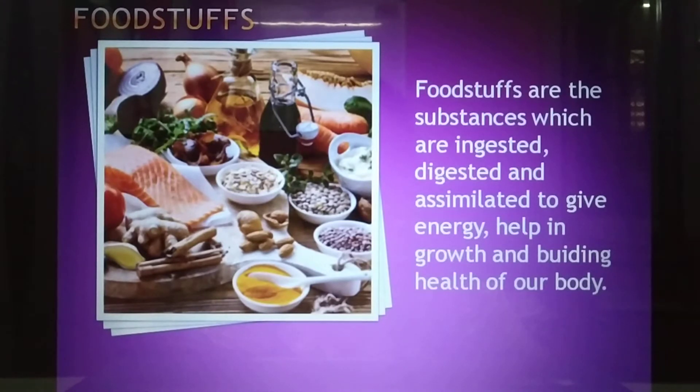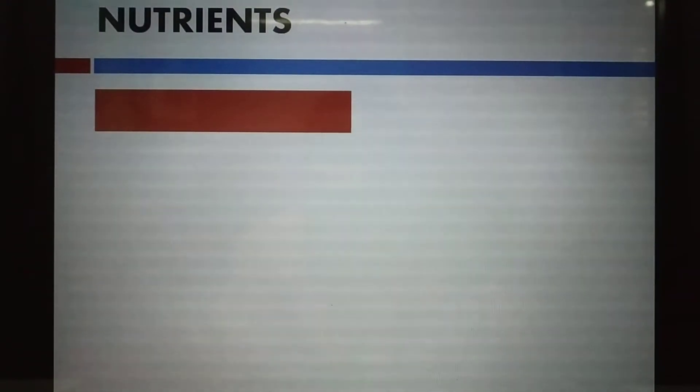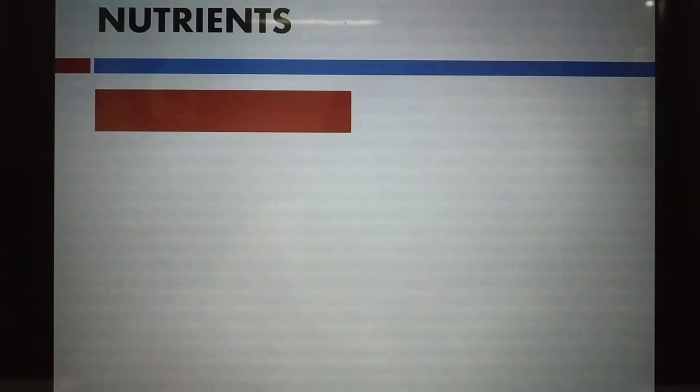After knowing nutrition, let us understand nutrients. We get nutrients from food. Nutrients are basically proteins, vitamins, fats, minerals, and carbohydrates — these are all different types of nutrients. These nutrients have been classified into two categories: macronutrients and micronutrients.